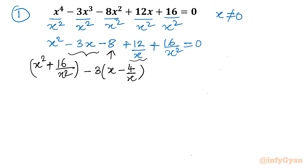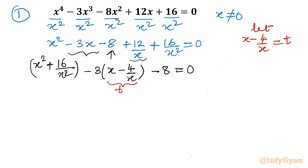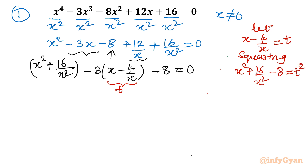This term is left without an x variable. So we have x squared plus 16 over x squared, and here we have x minus 4 over x. The substitution is obvious. Let x minus 4 over x equal to t. Then for x squared plus 16 over x squared, I will square both sides of the substitution: x squared plus 16 over x squared minus 8 equals t squared. So x squared plus 16 over x squared equals t squared plus 8.